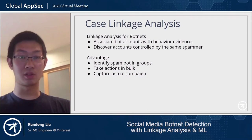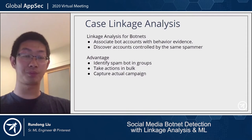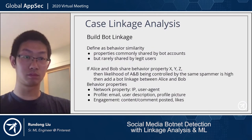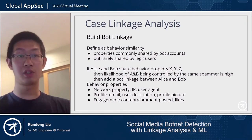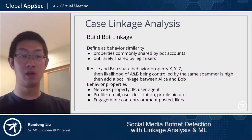The idea is to associate bot accounts with their behavior evidence and discover accounts controlled by the same spammer. There are clear advantages from this method: we can identify bot accounts in groups, take action in bulk, and capture the whole campaign by aggregating all spam accounts and their behavior. The key point of performing linkage analysis is to build the bot linkage, defined as behavior similarity — finding properties commonly shared by bot accounts but rarely shared by legitimate users. If accounts Alice and Bob share behavior similarities X, Y, and Z, the likelihood of them being controlled by the same spammer is very high, and we add a bot linkage between them.